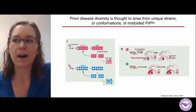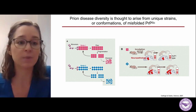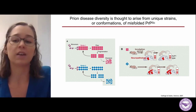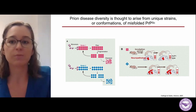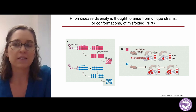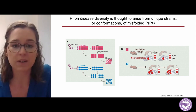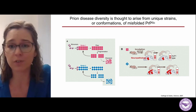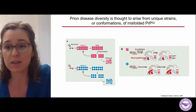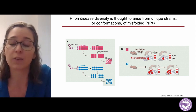Some people may wonder how the misfolding of one protein can cause so many different diseases. Even in humans, we have Creutzfeldt-Jakob disease and Kuru. We think that prion disease diversity arises from unique strains or conformations of misfolded PRPSC, or PRP scrapie. We can think about the different strains as different shapes, as seen in this figure. At the top, we have one strain represented by the pink squares, and this strain causes unique neuropathology in the brain of a host.